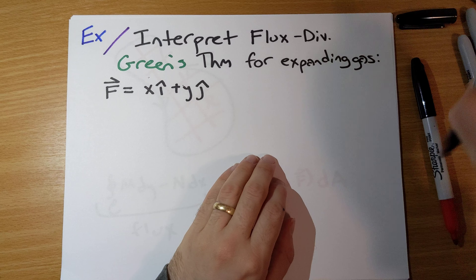This whole thing makes sense for the flux-divergence theorem. If you interpret it in terms of an expanding gas, it gives you a way of understanding this isn't something randomly cooked up — it actually makes sense. That is Green's theorem in the flux-divergence version. We'll verify it more rigorously and apply it in future videos.